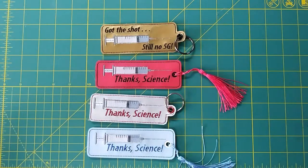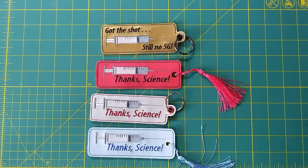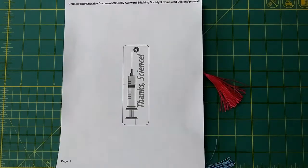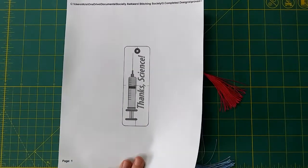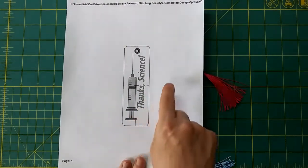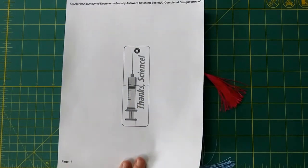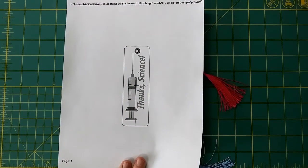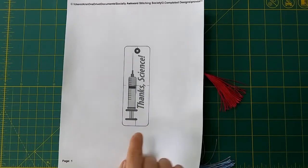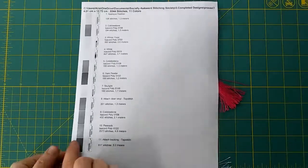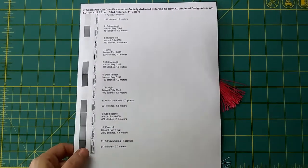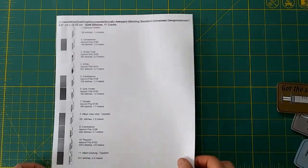The very first thing you're going to do is what I always want you to do, which is to print out your color change sheet that comes with your design. On one side you see the design and alignment marks so that if this was something you were putting on clothing or anything else that's not in the hoop, you could use these marks to figure out where you want that design to land. On the back we have all of our colors.